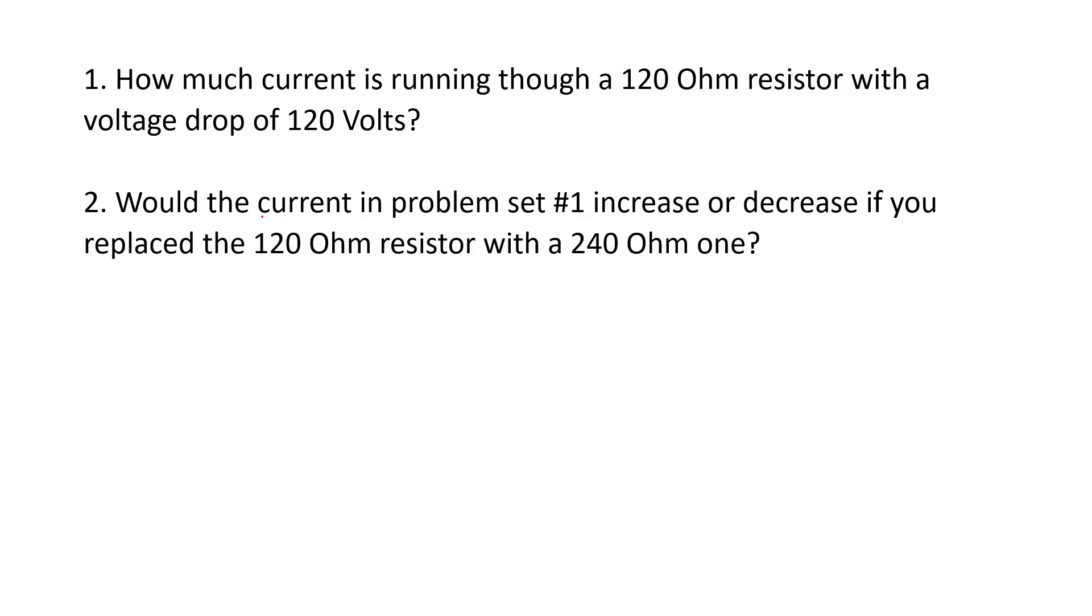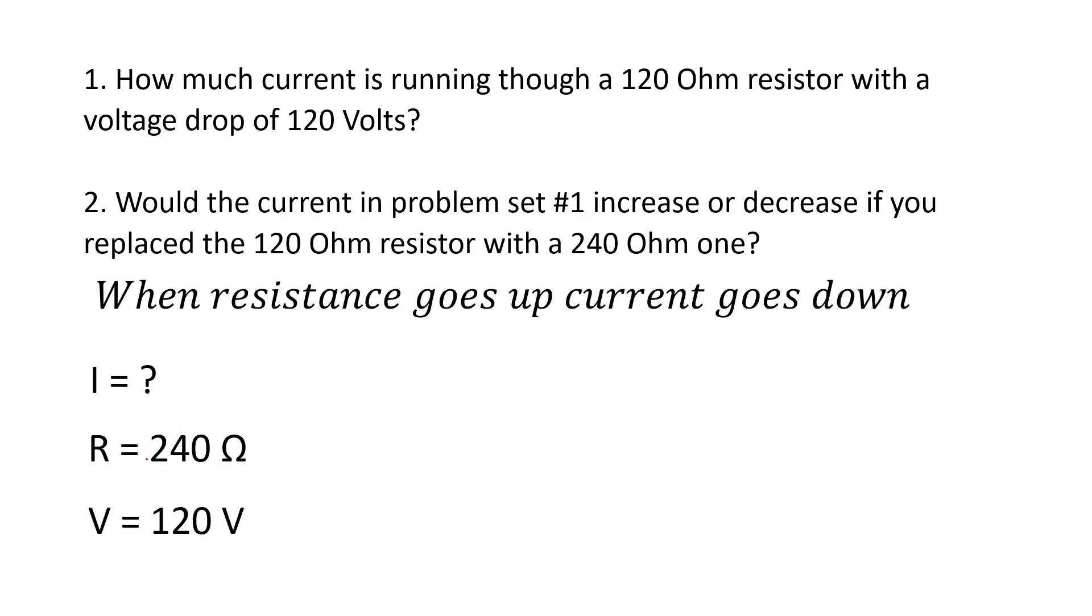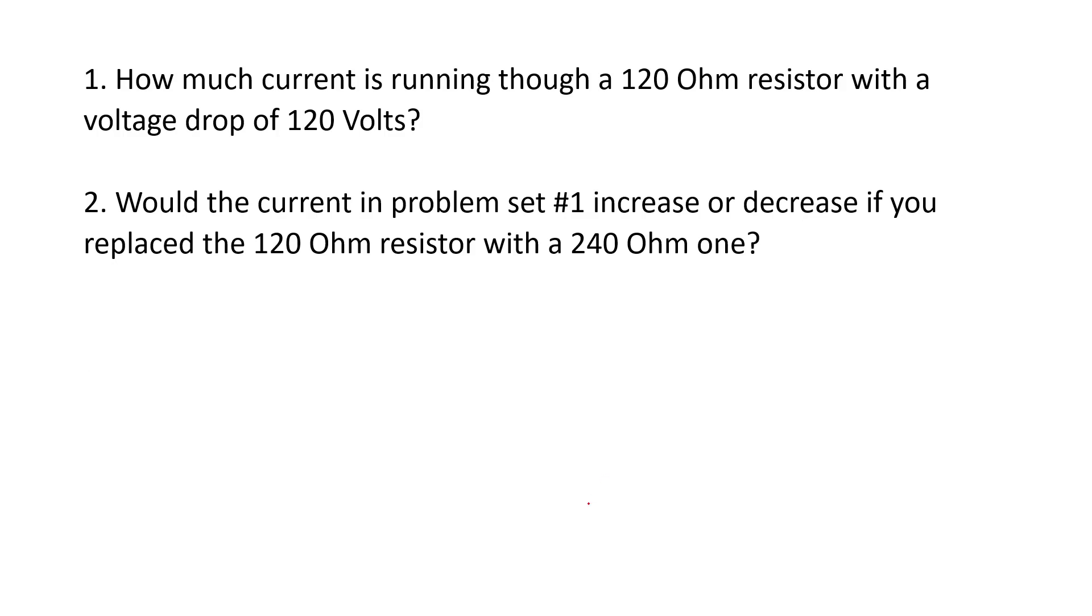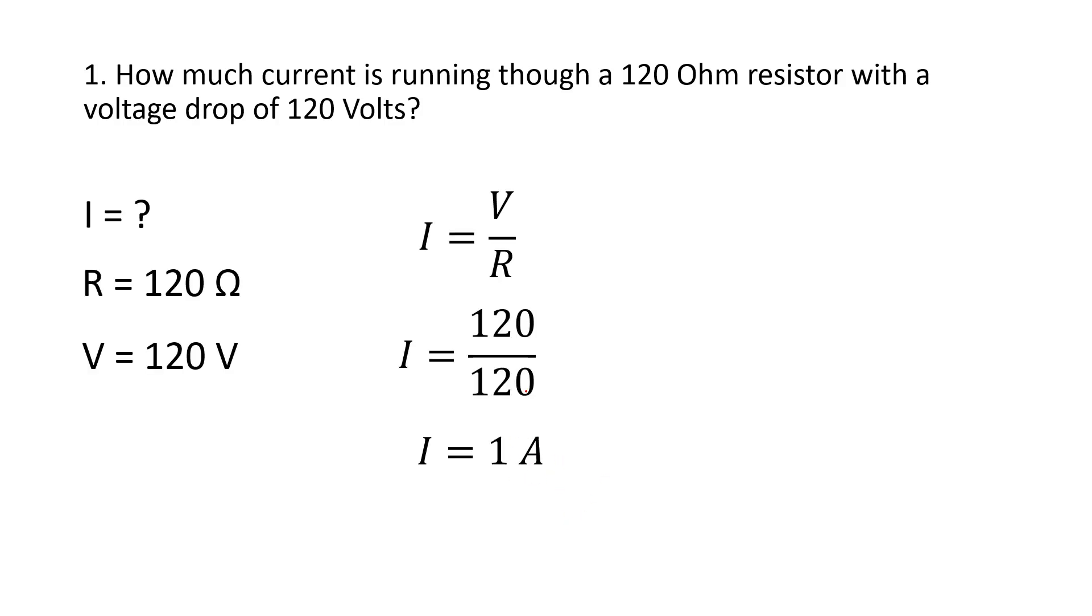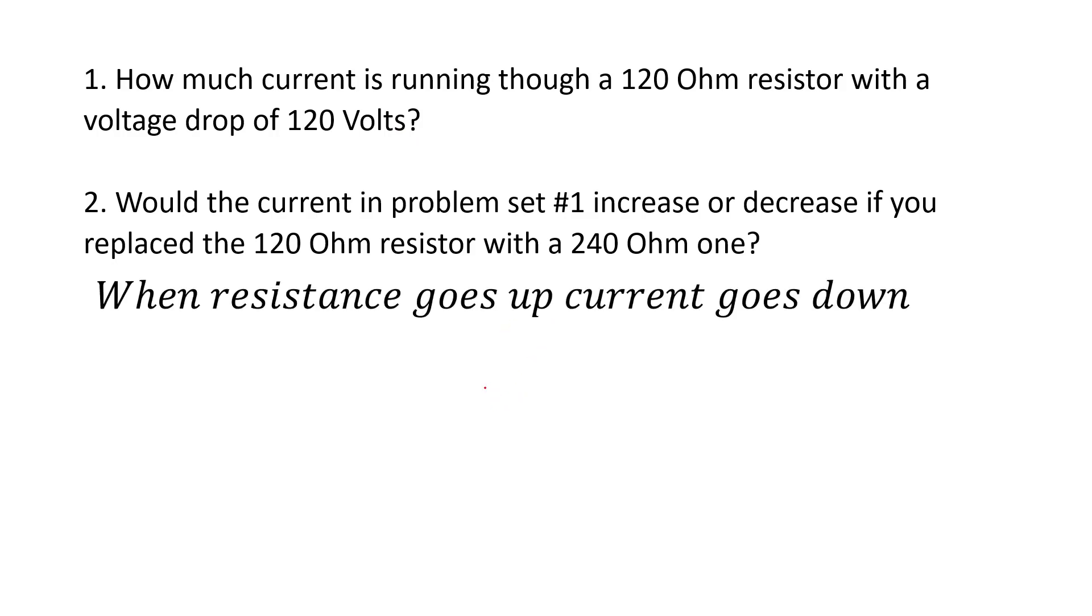Next problem: Would the current in problem set one increase or decrease if you increase the resistance? I'm just going to remind you of V equals IR, I equals V over R. And so if the resistance increases, current's going to go down. I don't actually have to do this problem to answer this question, but if I did this problem, I could plug in the values, and I'd find that the current was 0.5 amps here when it was one amp there because double the resistance, half the current as a result.